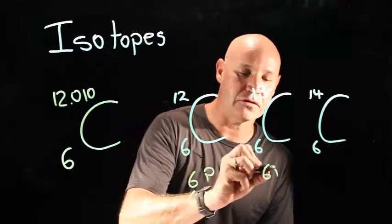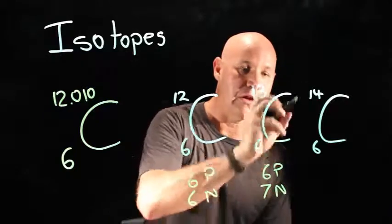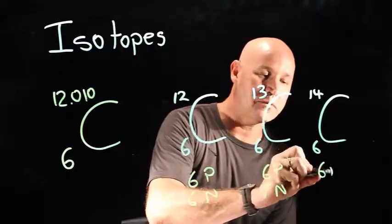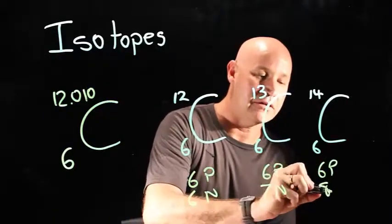Carbon 13 has 6 protons and 7 neutrons. Carbon 14 has 6 protons and 8 neutrons.